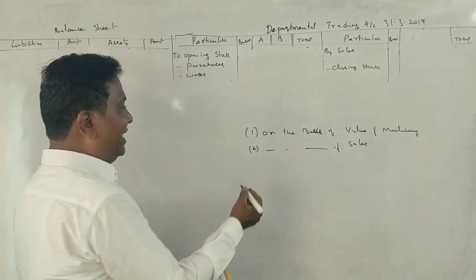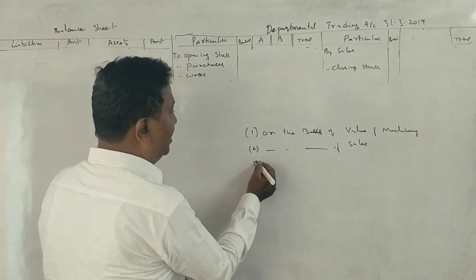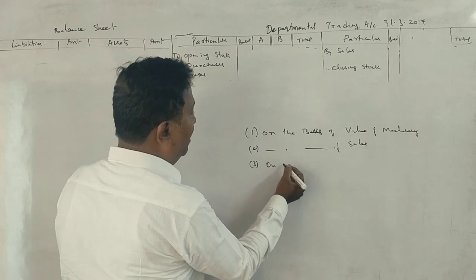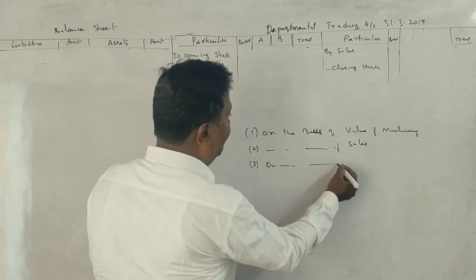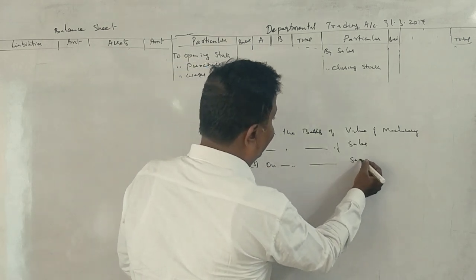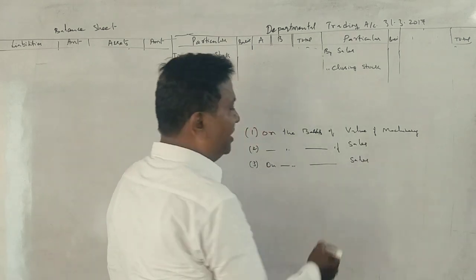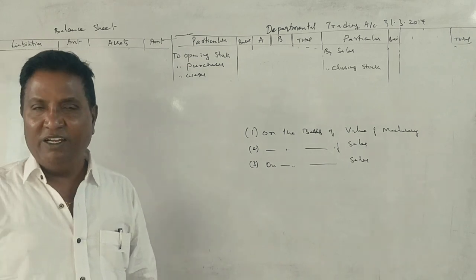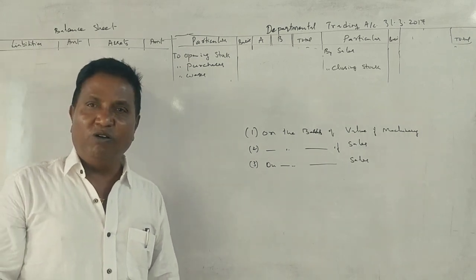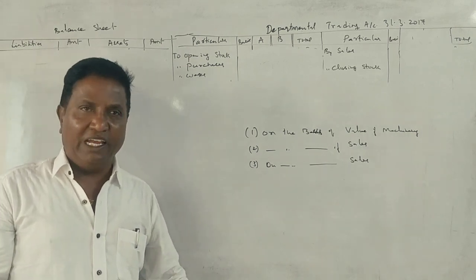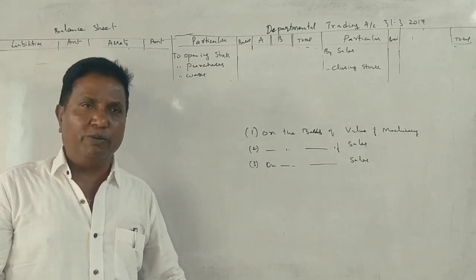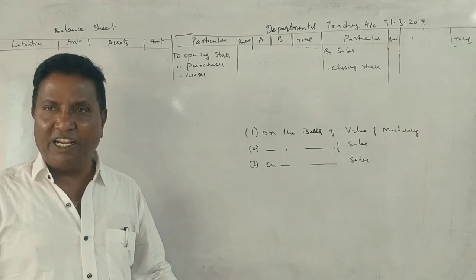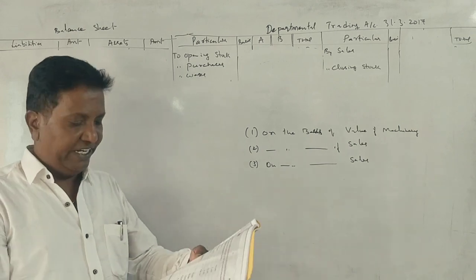Bad debts: 25. Bad debts are allocated on the basis of sales. You need to use the sales ratio — everyone follows sales as the allocation basis for bad debts.